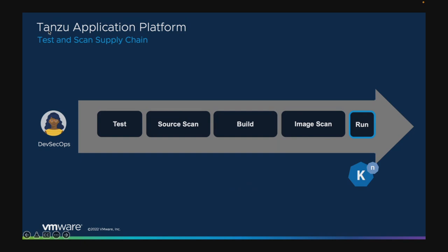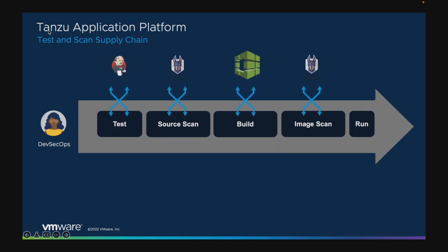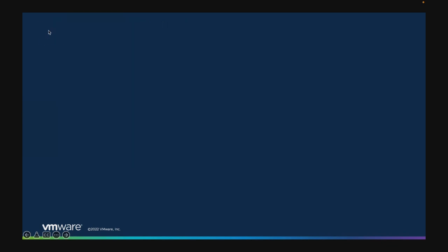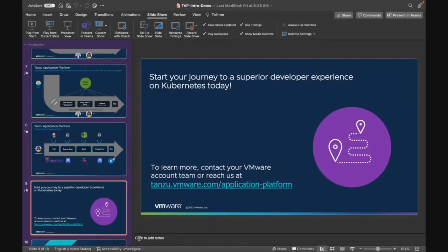One important thing to understand is that I've talked about a lot of different tools — Tekton, Grype, Tanzu Build Service — and we want to make sure we have flexibility in those tools. A lot of organizations have existing processes and investments in tools such as Jenkins or Snyk. We want to make sure supply chains are adaptable, with the ability to swap out Tekton for Jenkins if they have a significant investment in Jenkins. We're certainly working towards that. It's always important to point that out because we get asked fairly often: can I leverage my Jenkins continuous integration tests? And the answer is absolutely yes.